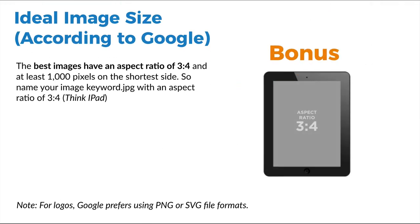Here's a bonus regarding images. I did some digging and Google actually recommends an ideal image size: they prefer a 3-by-4 aspect ratio, and if it's 1,000 pixels wide, that works for Google — even though Google won't display that large an image, that was the recommended size they came back with. Also, they tend to prefer PNGs. If you want to improve your chances, having a PNG might help just a bit more than a JPEG, although I've seen tons of JPEGs ranking as well.